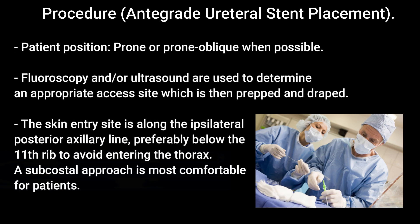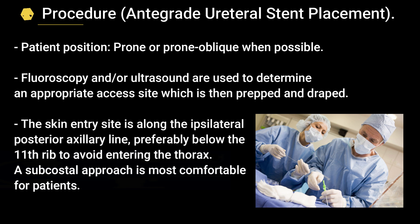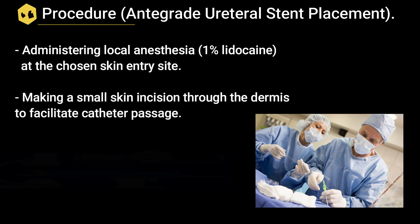First, patient positioning: the prone or prone oblique position is given when possible. Fluoroscopy or ultrasound are used to determine an appropriate access site, then the area is prepared and draped. The skin entry site is along the ipsilateral posterior axillary line, preferably below the 11th rib to avoid entering the thorax — a subcostal approach is most comfortable for patients. Local anesthesia is then administered at the chosen skin entry site.